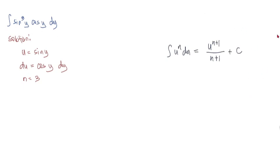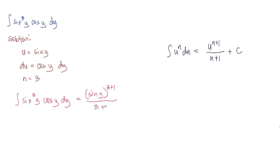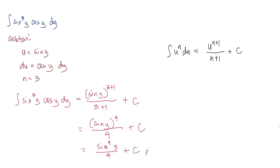Using that formula, the integral of sine cubed y cosine y dy equals u to the n plus 1 over n plus 1 plus C. Our u is sine y and n is 3, so we get sine y raised to the power of 4 over 4 plus C. We can write this as sine to the fourth y over 4 plus C, and this is our answer for the first integral.